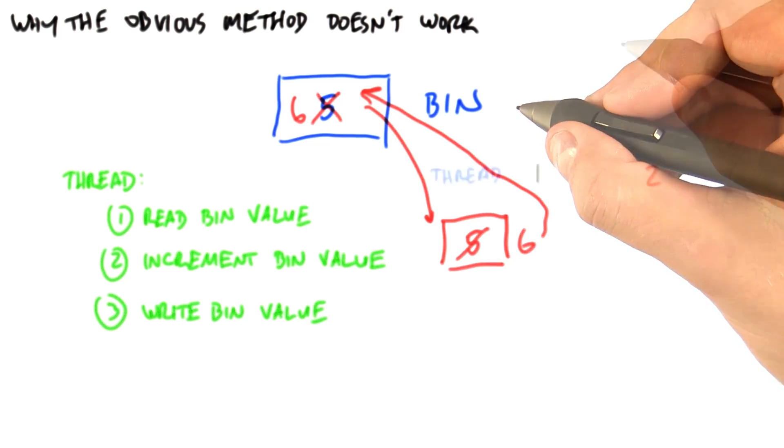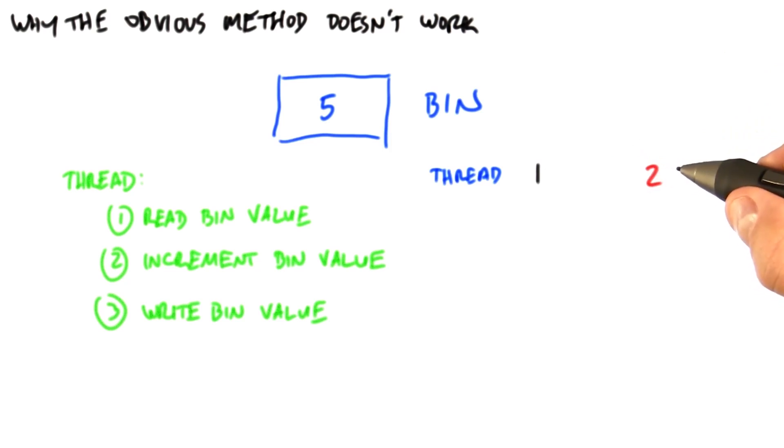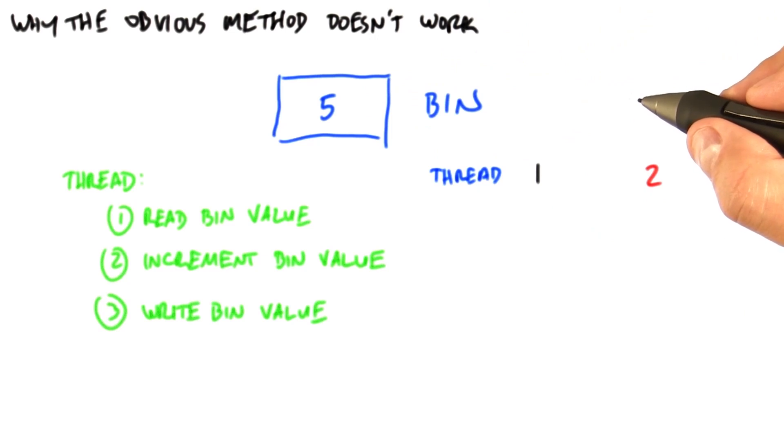Let's illustrate how this could go wrong. Consider two threads running in parallel: one, the black thread, and two, the red thread. Both want to increment the same bin, this blue bin here that starts off with the value 5. Both threads happen to be running at the same time.